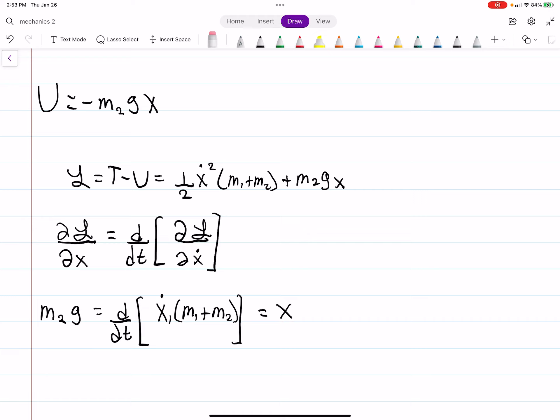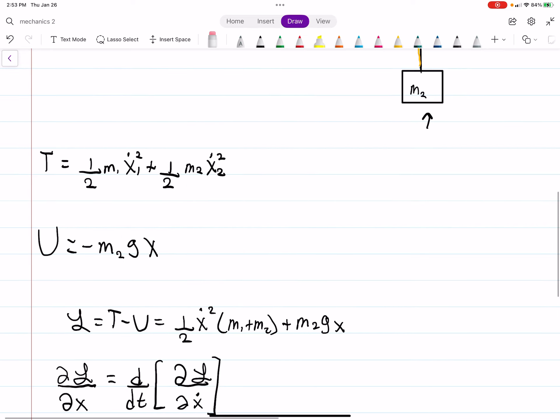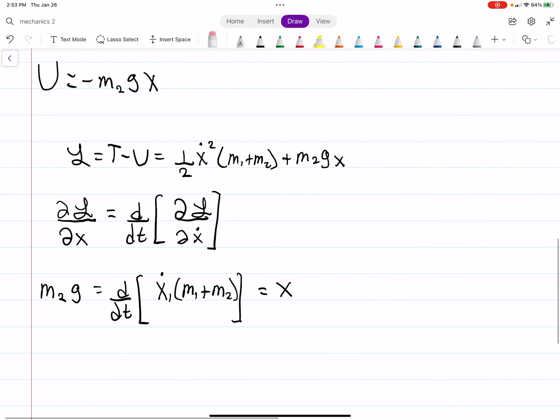And then we take a time derivative of that. I don't know why I used X1. These should just be X's now, because they're the same. That should just be X. So this is X double dot now, M1 plus M2.